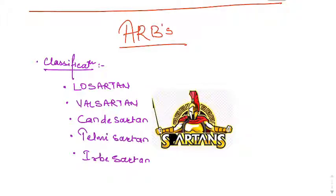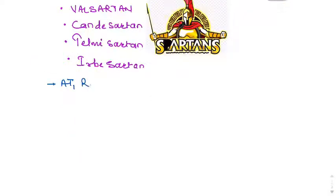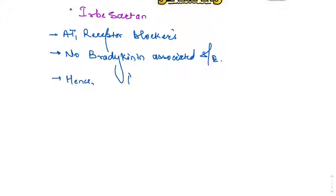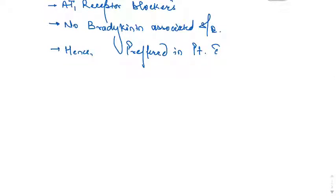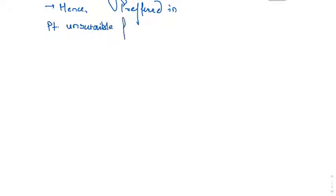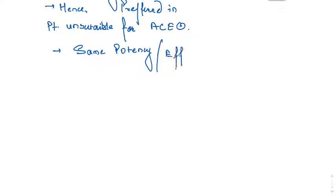Now we discuss angiotensin receptor blockers (ARBs), which include losartan, valsartan, telmisartan, and olmesartan. With ARBs, there are no bradykinin-associated side effects, making them preferred for patients who develop bradykinin-related side effects from ACE inhibitors. Their potency and efficacy are similar to ACE inhibitors.